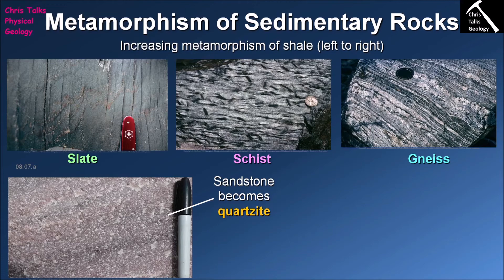Quartz is quite a robust mineral — it just sits there and you have to increase the pressure and temperature significantly to make it do anything. What can happen is that exposure to higher temperatures and pressures causes the quartz crystals to begin fusing into each other, turning our sandstone — which consists of individual clasts cemented together — into a quartzite where quartz crystals are actually fused to one another, producing a very strong, cohesive rock.